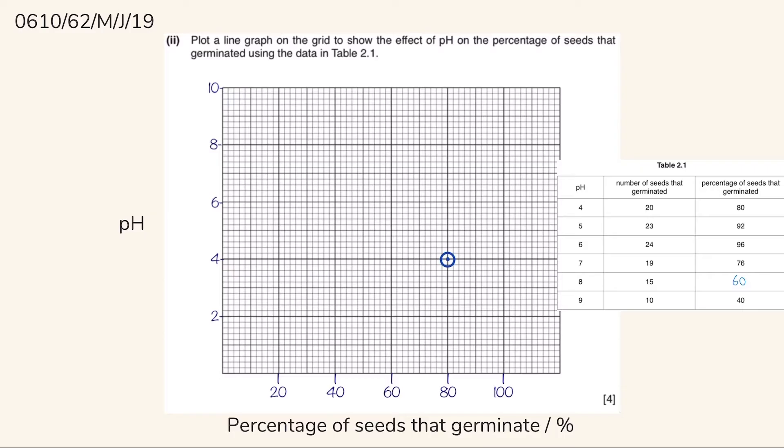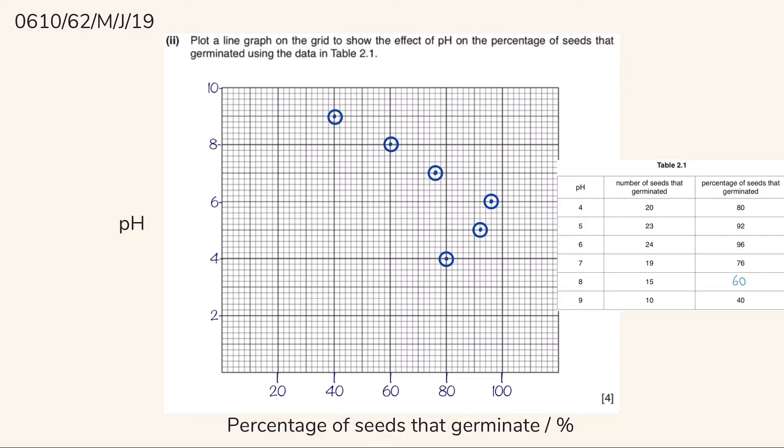So for pH 4, the number of seeds that germinated are 20 and their percentage is 80. So the points will go here. Once we've added all the points for the values on the table, it's time for us to connect those points.